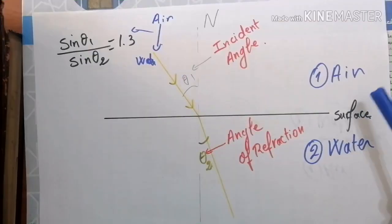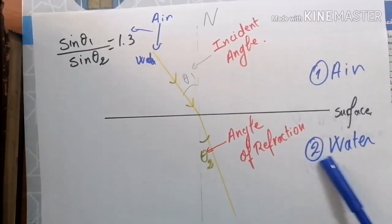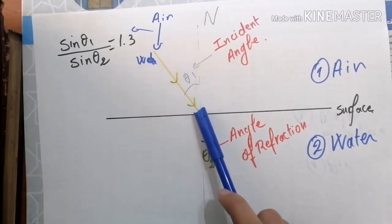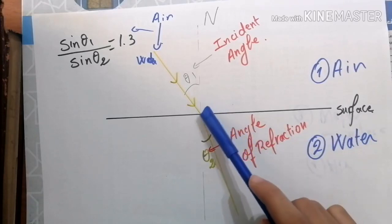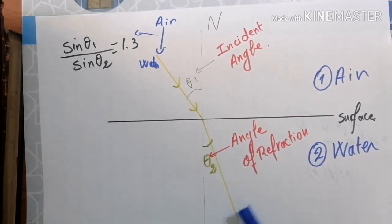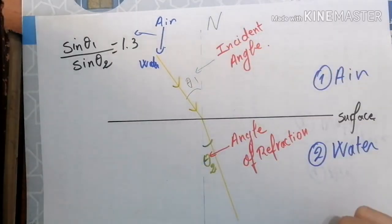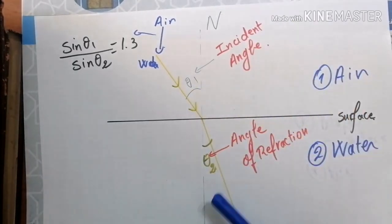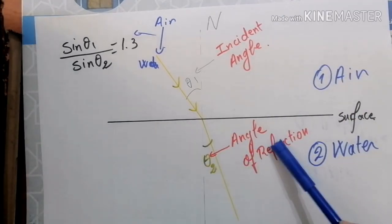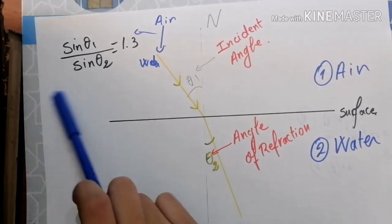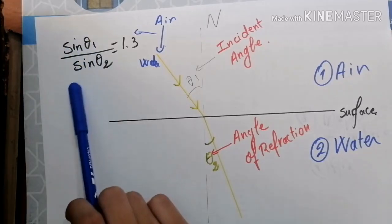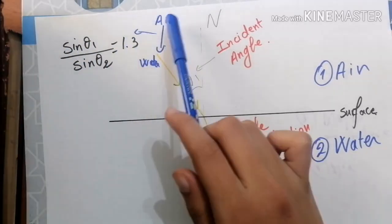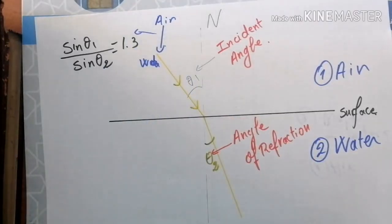So I have here two mediums. The first one is air and the second one is water. When the beam of light comes and strikes the surface, you can see the bend in its direction, and when you draw the normal to the surface, this angle theta 1 is called the incident angle and this angle theta 2 is called the angle of refraction. The sine of theta 1 divided by the sine of theta 2 is constantly equal to 1.3 whenever light is traveling from air to water.